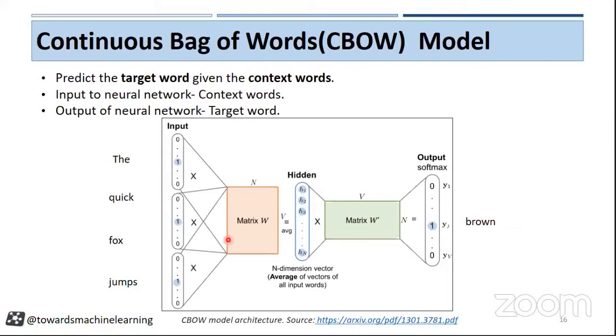And we multiply with these W vectors. So basically, if we have the window size as two, we will get four words here. And when we multiply with this W matrix, we will get four vectors.